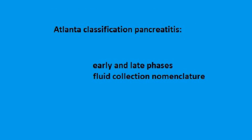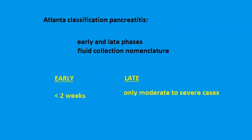The Atlanta classification predominantly divides pancreatitis into early and later phases and fluid collection nomenclature. The early phase is the first two weeks; the late phase is two weeks or further out, up to months. Just realize that even though it's called the late phase, it can still be within the acute framework if it's within weeks three or four.